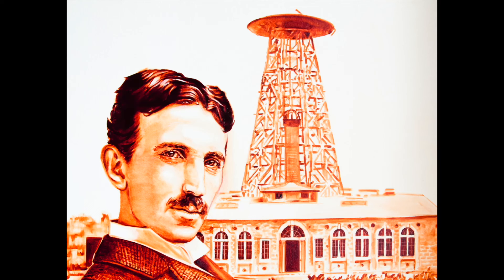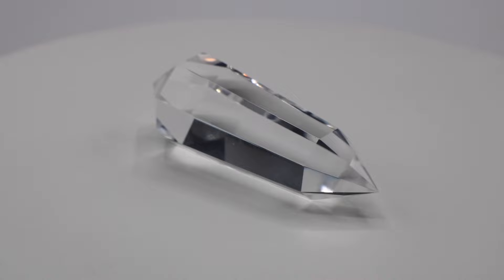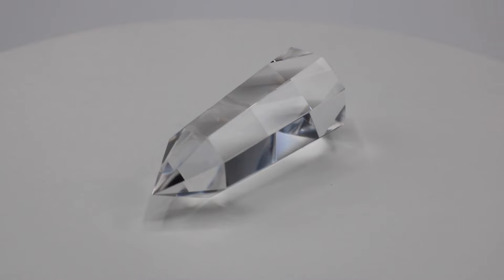Tesla said, in a crystal we have a clear evidence of the existence of a formative life principle, and though we cannot understand the life of a crystal, it is nonetheless a living being. So now we have a tool, a Vogel cut crystal, which is a powerful amplifier of thought energies. It has the ability to take a thought, cohere, and amplify it. Let's take a detailed look into what a Vogel crystal is and its unique properties.